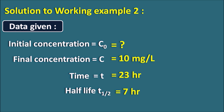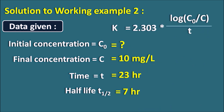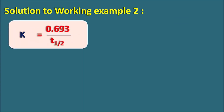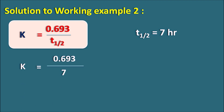We use the equation k equals 2.303 times log(C0/C) divided by t, but first we need to find k from the half-life. Using k equals 0.693 divided by t-half, and substituting t-half equals 7 hours, k equals 0.693 divided by 7, which gives 0.099 hour inverse. So the elimination rate constant is 0.099 hour inverse.